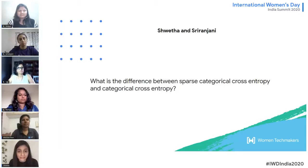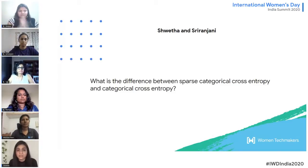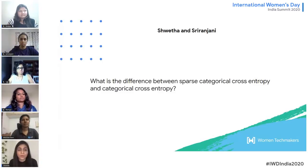Categorical cross entropy is used for multi-class classifications. The classification can be binary or multi-class — either two classes like yes/no or cat/dog, or more than two classes. For example, in the MNIST digit classifier, you classify training examples into 10 classes. The difference between sparse categorical cross entropy and categorical cross entropy lies in how you represent your target variables.